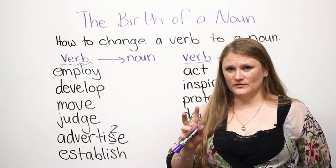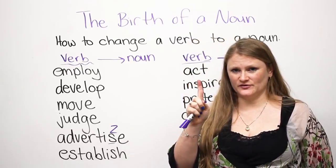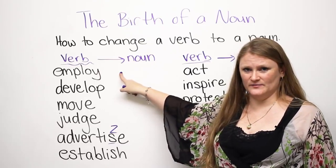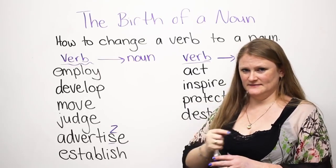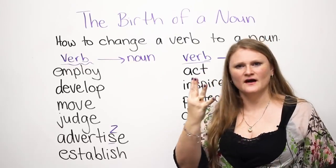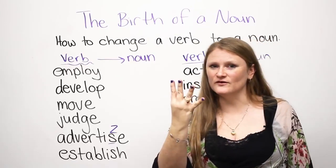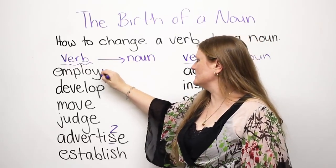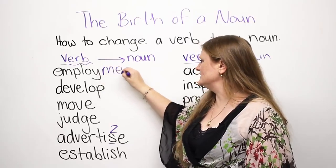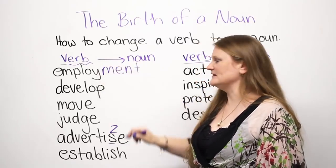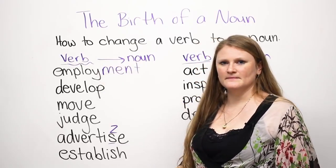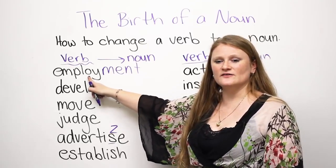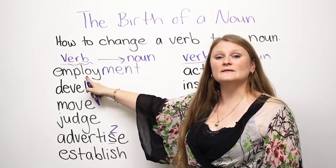So, two tricks. The first trick is we're going to take these verbs and add four letters to make it a noun. The letters are M-E-N-T — 'ment'. So we have the verb employ, and the noun changes to employment.